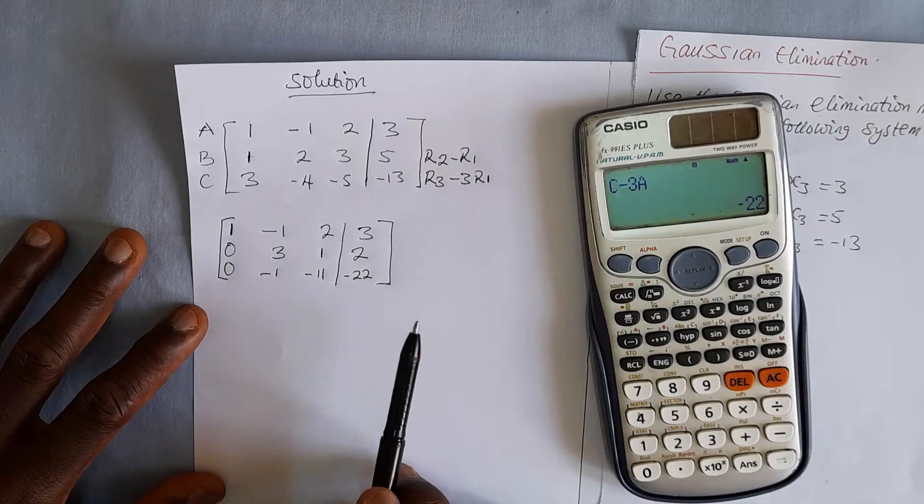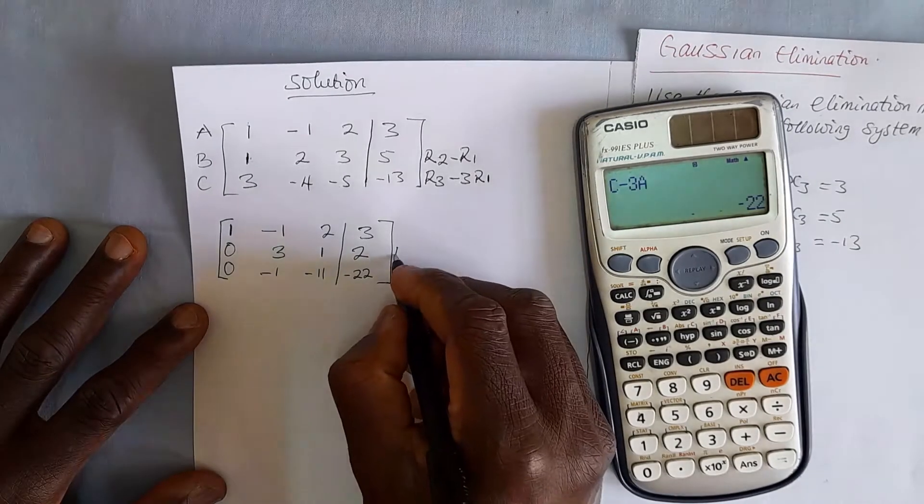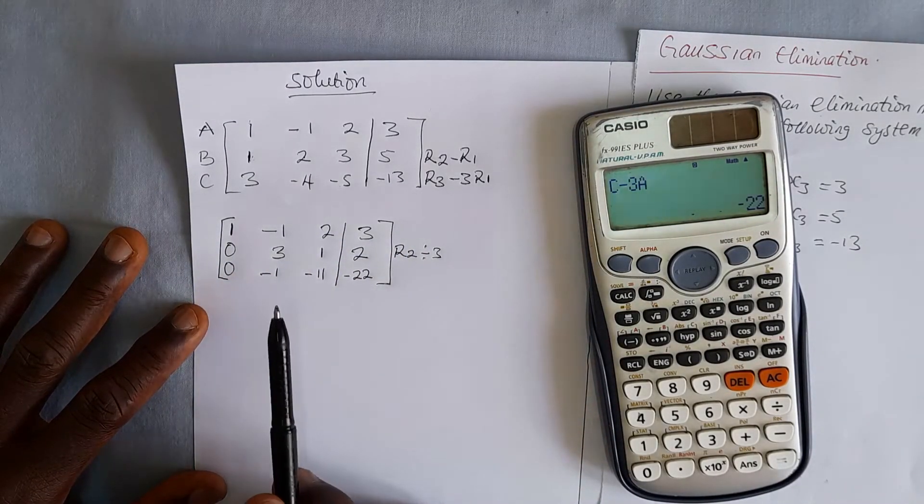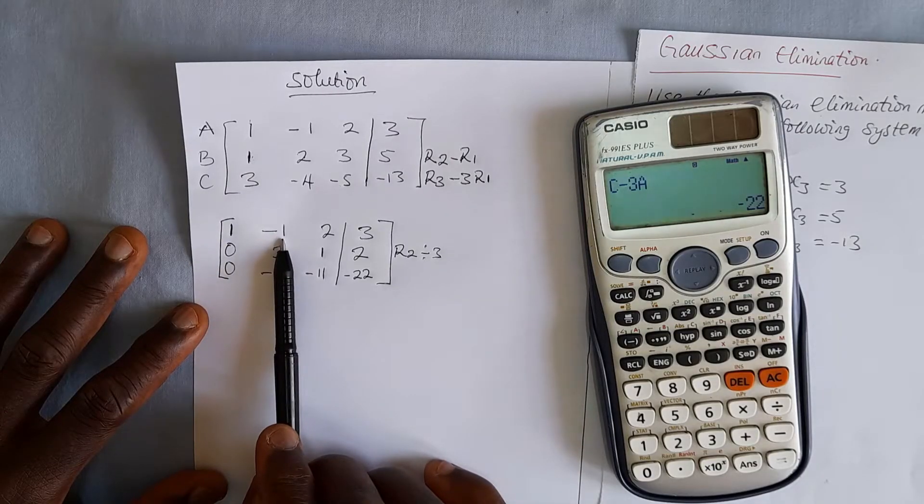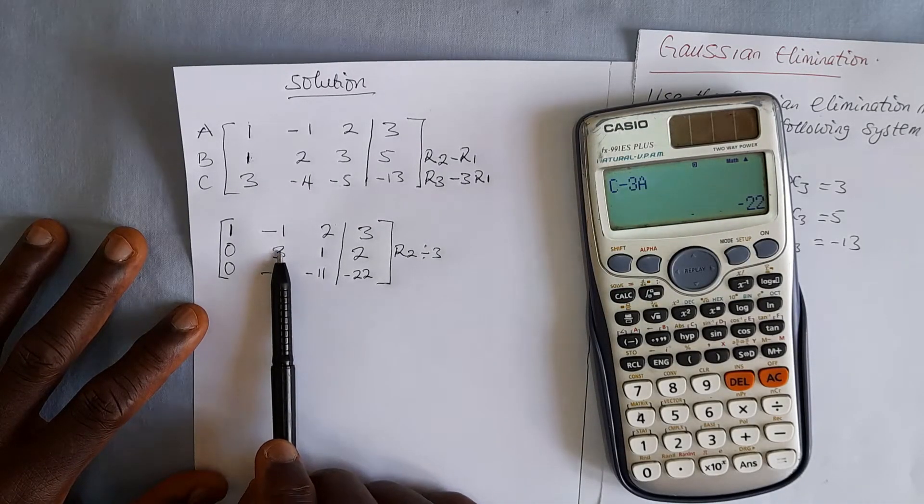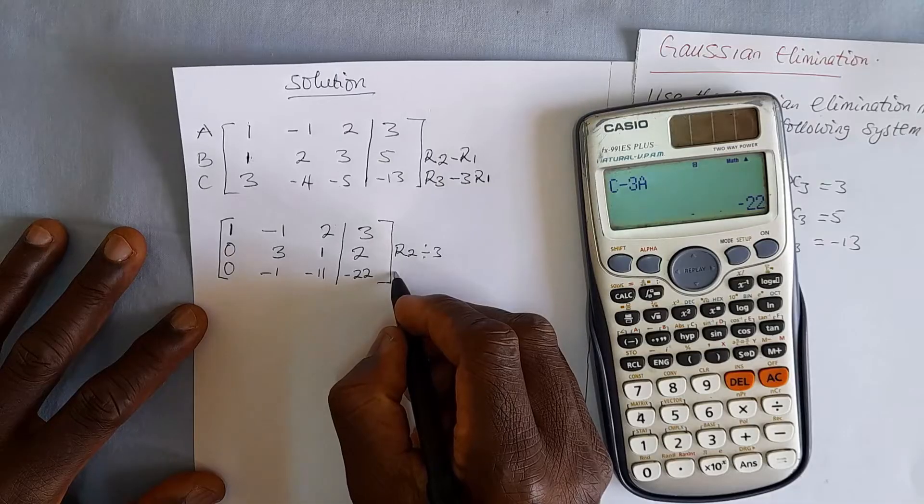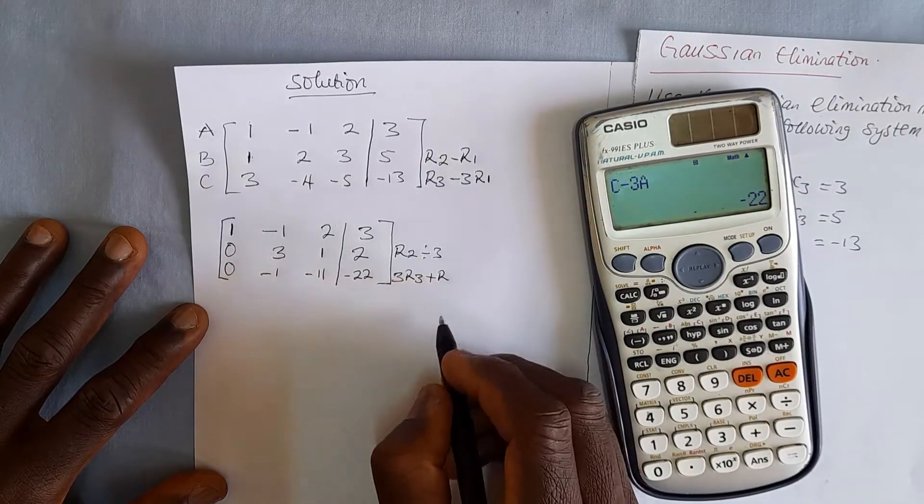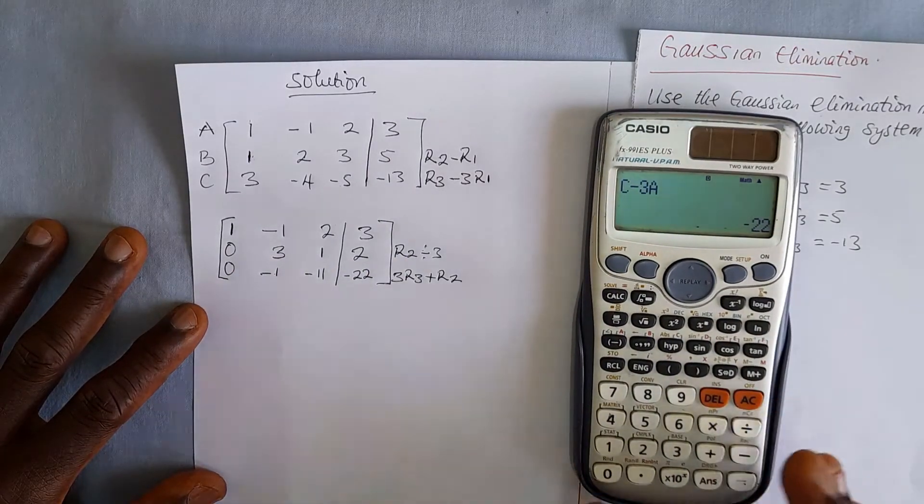Now we do another row operation, because what we want is to have a 1 here, a 0 here, and a 1 here. So we take row 2, we divide it by 3, and then I must say here that when you want to have an operation in column 1, use row 1. When in column 2, use row 2. When in column 3, use row 3. So we are now in column 2, we want to make this a 0. So we are going to use row 2. So let's say we take 3 row 3 plus row 2. That will give us a 0 here. And here we will have definitely a 1. That is what we are expecting.